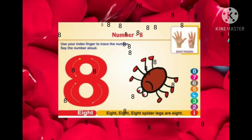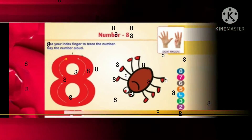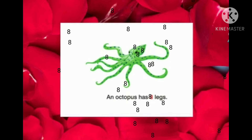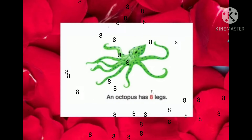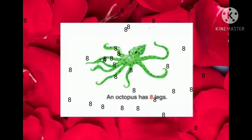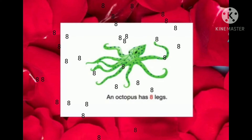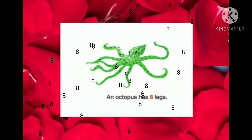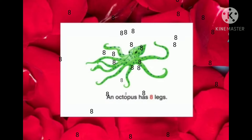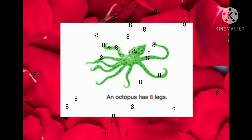Very good. Let's move to the next picture. What do you see next? An octopus. How many legs does an octopus have? Right, 8 legs. An octopus has 8 legs.